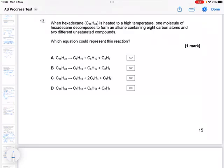When hexadecane is heated to a high temperature, one molecule of hexadecane decomposes to form an alkane containing eight carbon atoms and two different unsaturated compounds. So C16H34 is going to make an alkane with eight carbons. That's going to be C8H18.